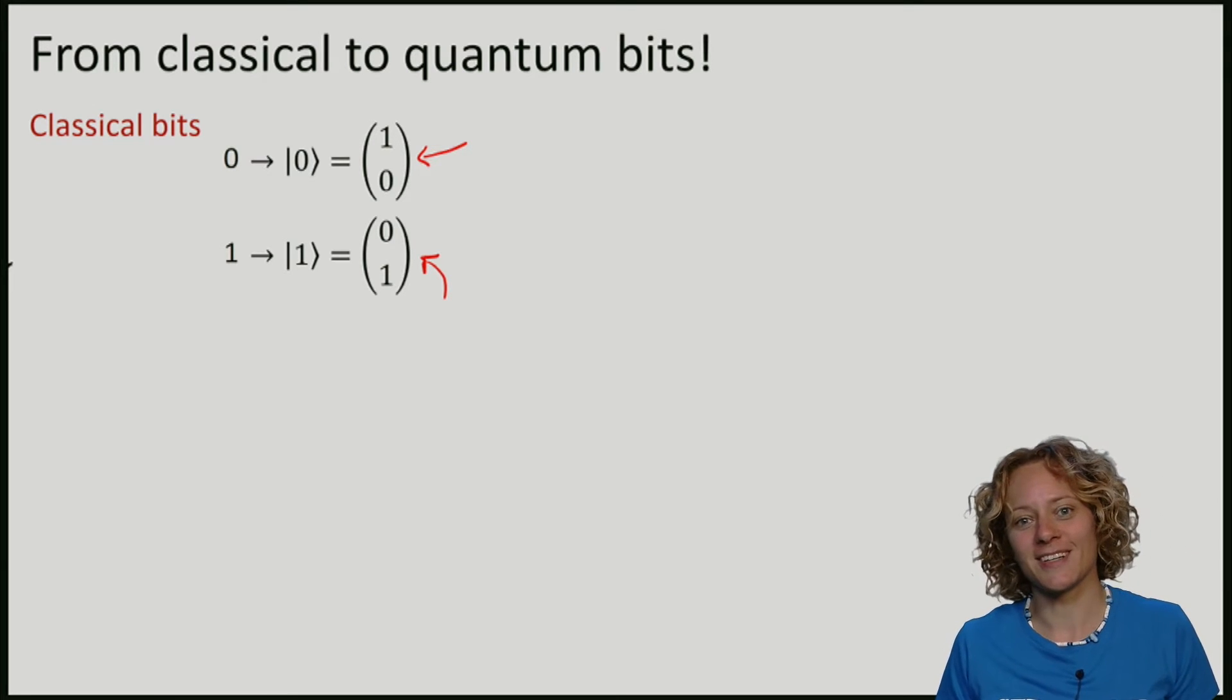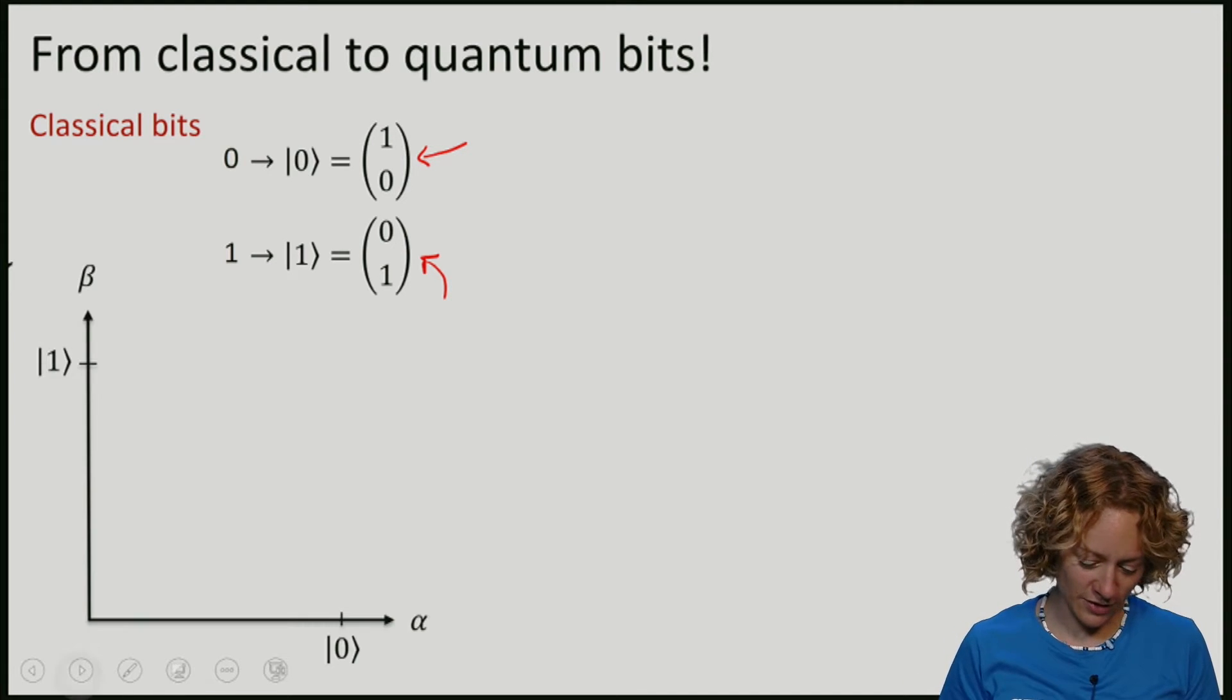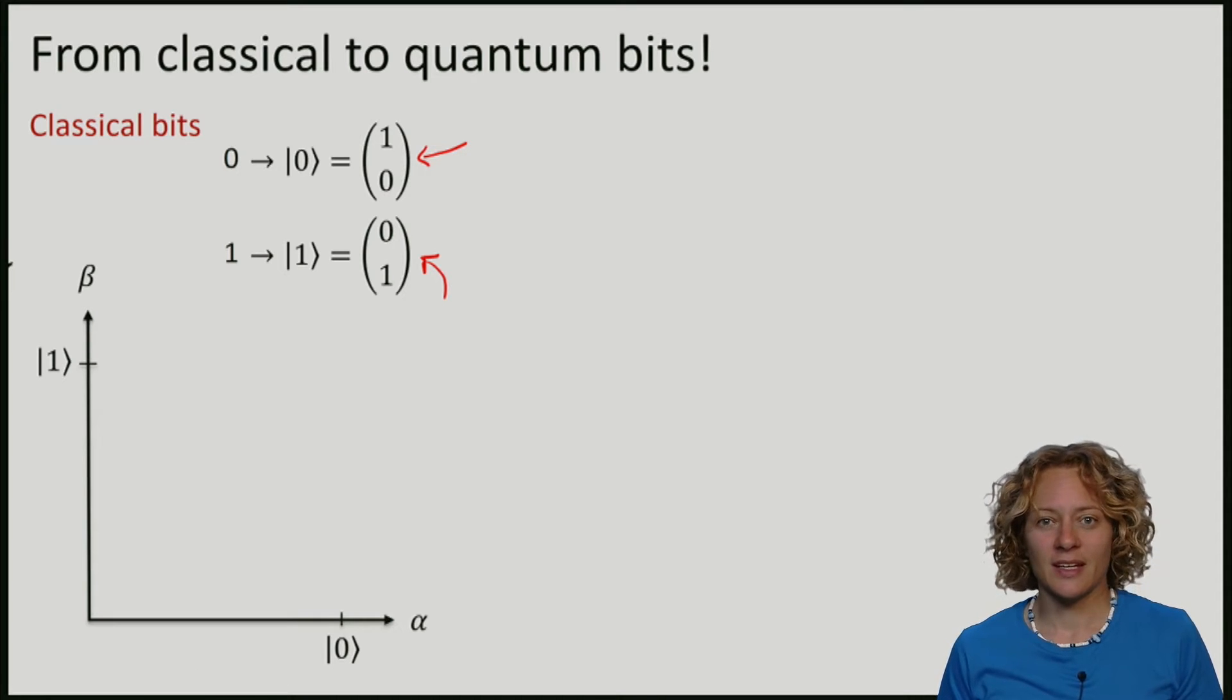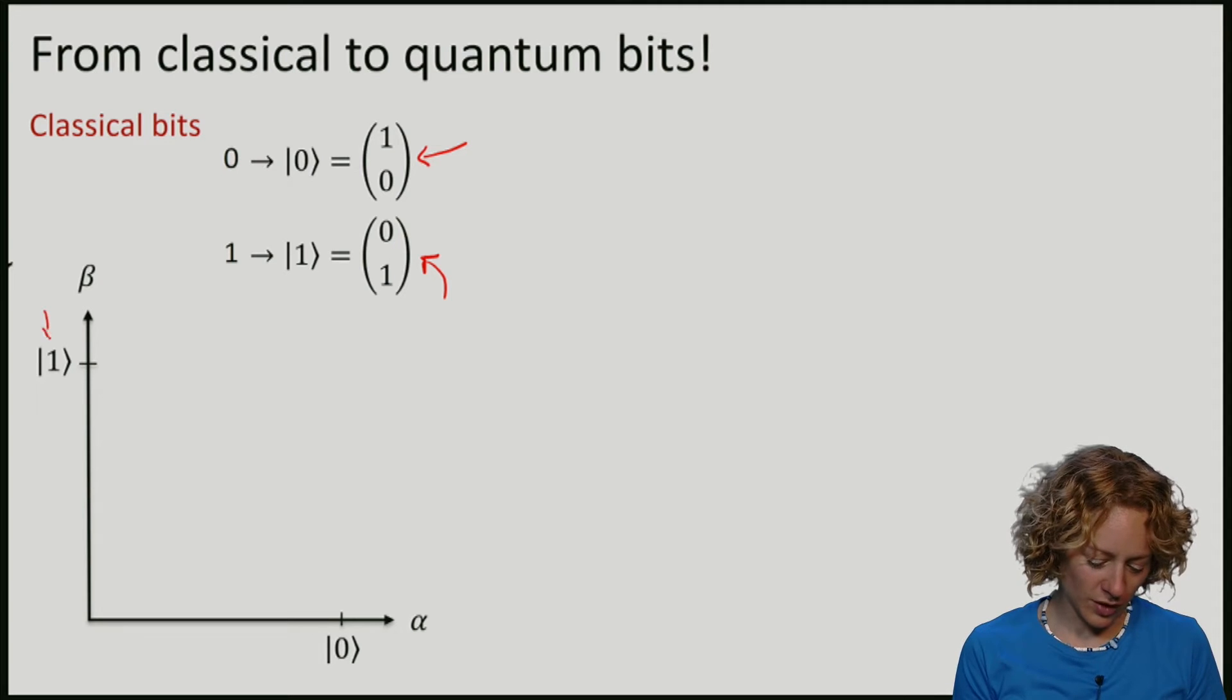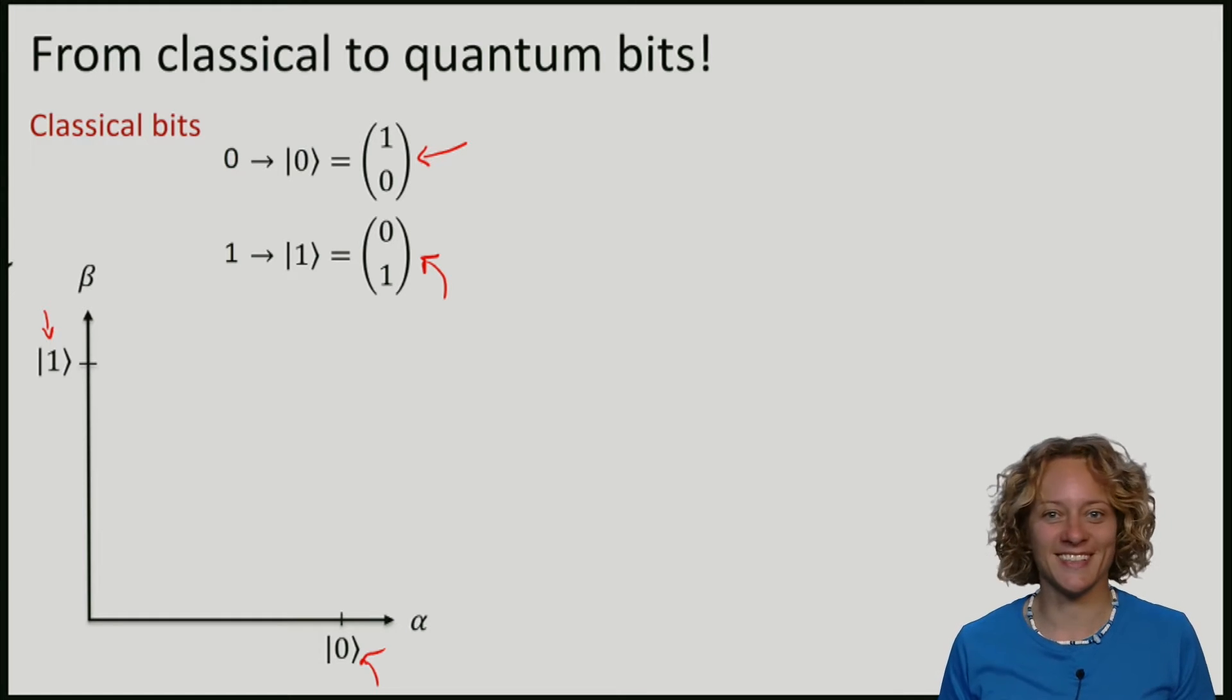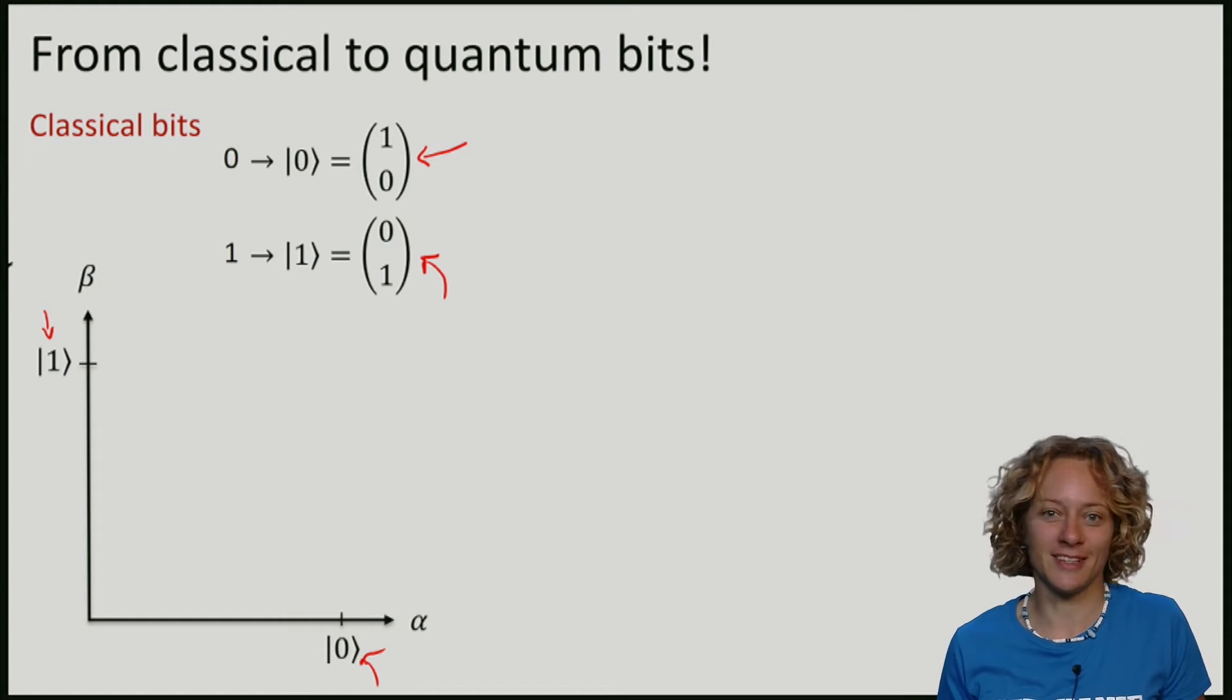These two vectors are orthogonal, so we can think that there is an axis, which I'll call alpha, with a vector zero, and another axis, beta, with a vector one. So far so good. We haven't really done anything there, we've just written the bits in another way.